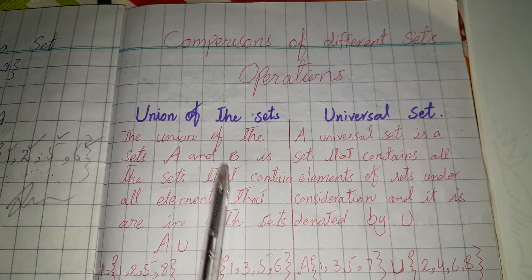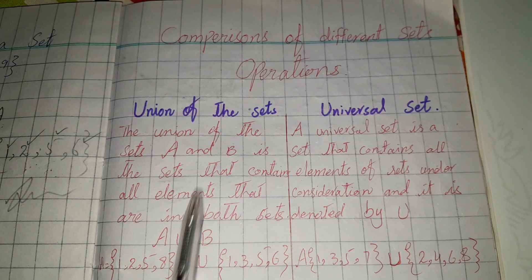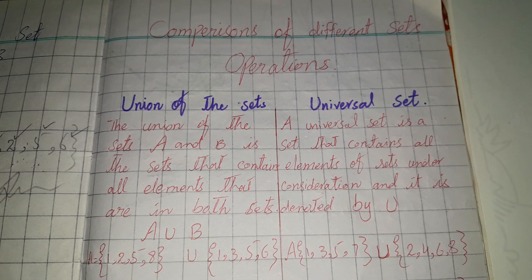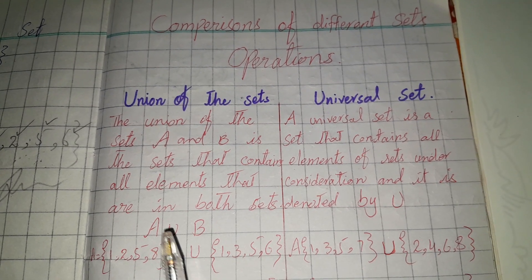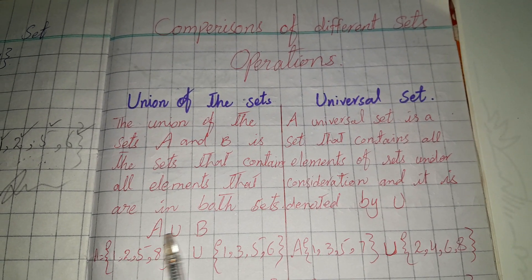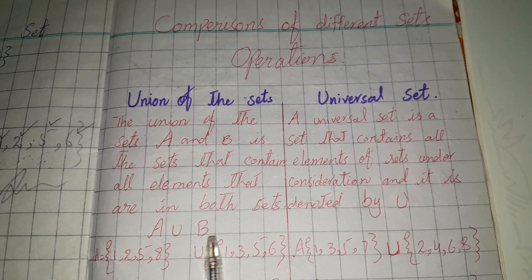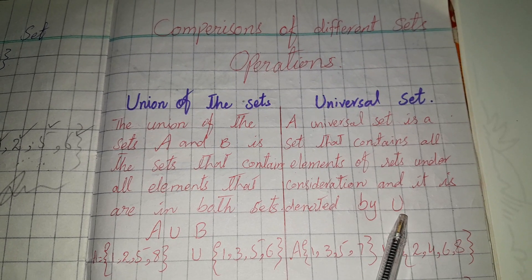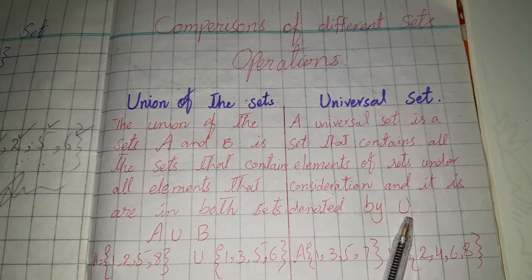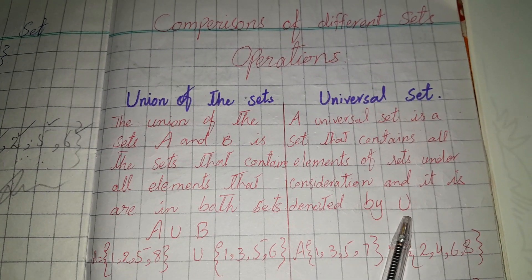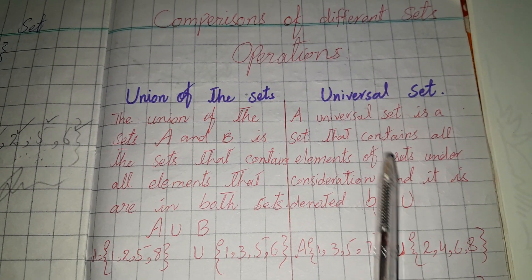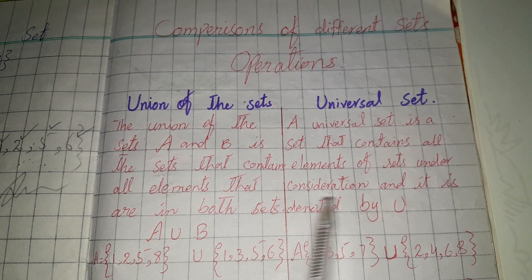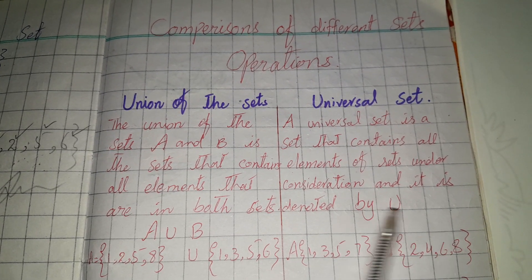The definition is essentially the same — A union B — but for the universal set, we simply write U. That is the main difference between the two in terms of notation and operation.